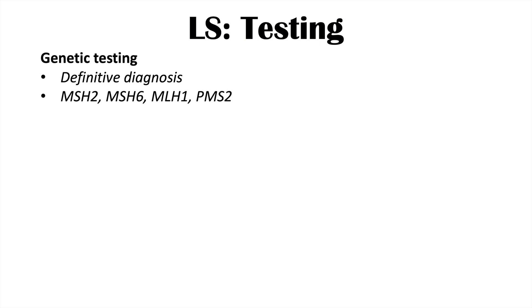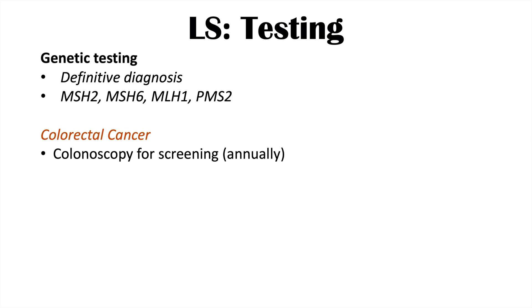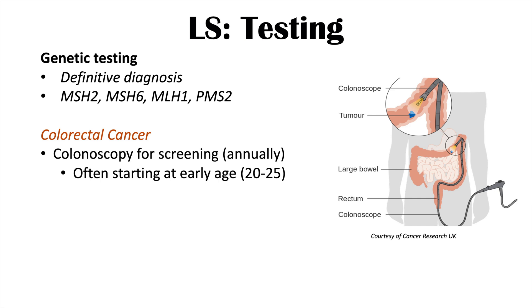Genetic testing is the more definitive diagnosis for Lynch syndrome, looking for affected alleles in the DNA mismatch repair proteins MSH2, MSH6, MLH1, and PMS2. Large deletions in EPCAM can also be looked out for. Colonoscopy is used for colorectal cancer screening, starting much earlier than in the general population — often annually beginning at age 20–25, or two to five years before the earliest family case, which could mean starting as early as age 15.